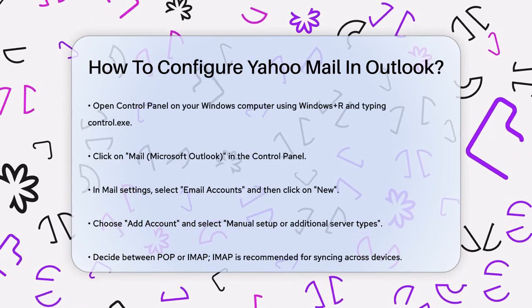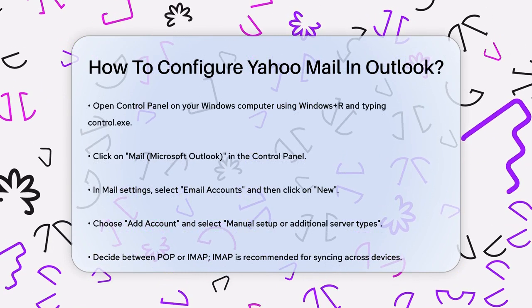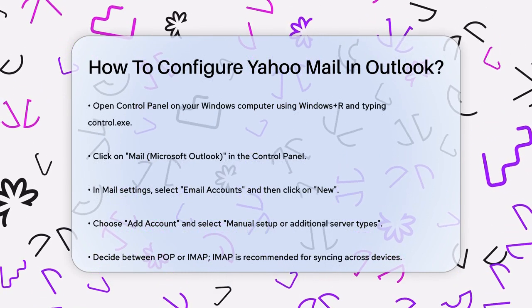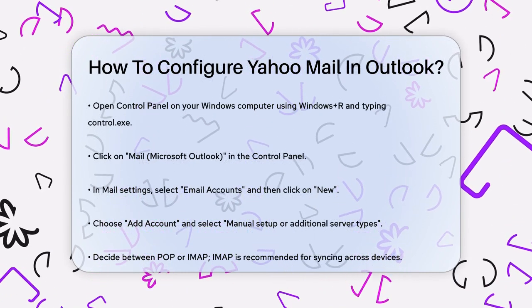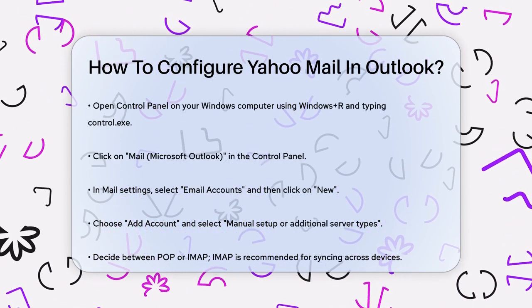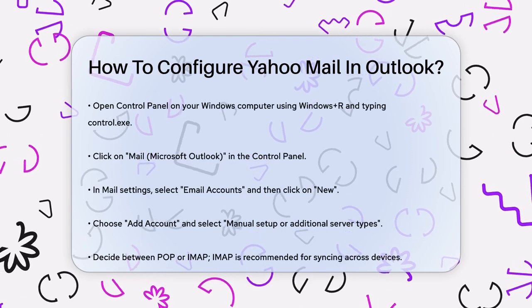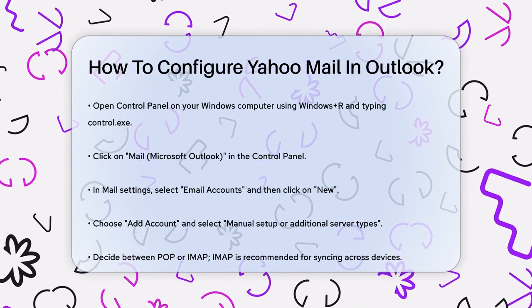Once you're in the mail settings, click on Email Accounts and then select the icon for New. Here you'll choose Add Account and then select Manual Setup or Additional Server Types.